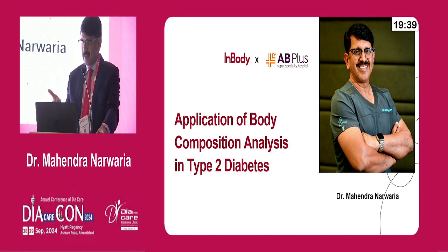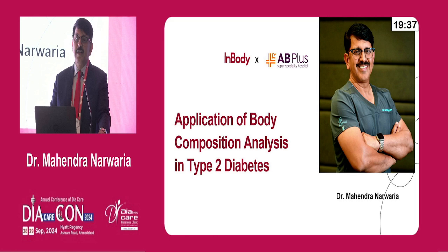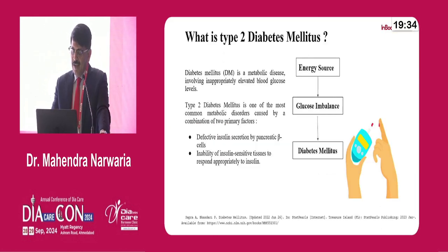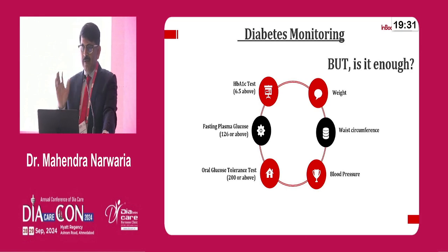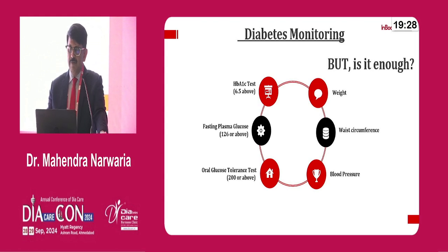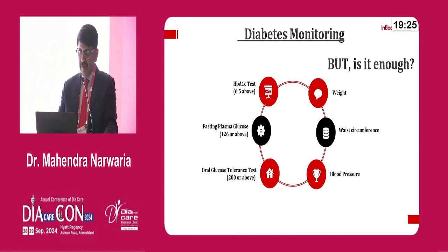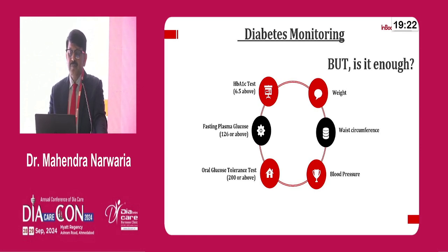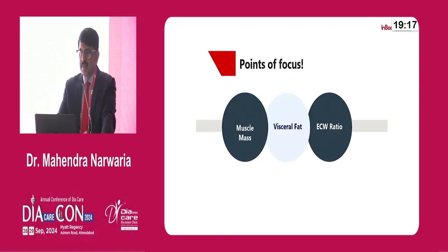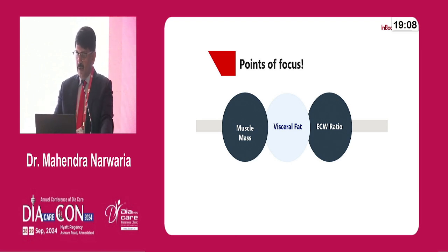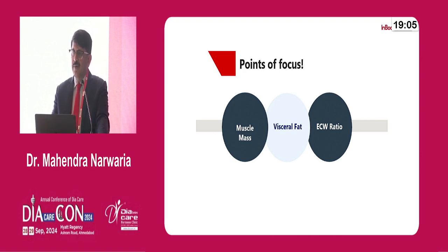I don't know why I was assigned this lecture because I must have brought more medicine than anybody else. Everybody knows about diabetes, but most of the time whatever we monitor — weight, waist circumference, blood pressure, fasting glucose or obesity — this is not enough. Ideally we should monitor their muscle mass, muscle fat, and their extracellular water ratio. If we maintain muscle mass, 40% fat can be reduced, and diabetes severity can go down.